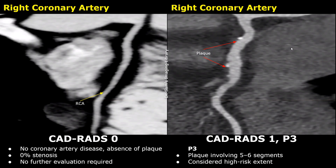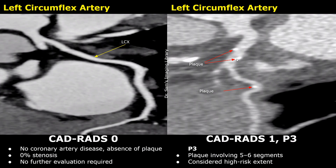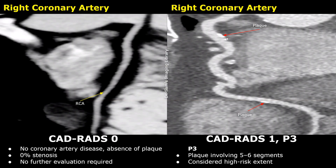This is considered high-risk extent. Let's look at another case of CADRADS-1, P3. Calcified plaque is present in the proximal left anterior descending artery with stenosis between 1 and 24%. Plaques are also present in the proximal and distal left circumflex artery with stenosis between 1 and 24%. The right coronary artery had plaques in the proximal and distal segments. In total, we have five segments with plaque involvement and maximum stenosis between 1 and 24%, graded as CADRADS-1, P3. It is still considered high risk for cardiac events due to its high plaque burden, and aggressive preventive therapy is recommended in such cases.